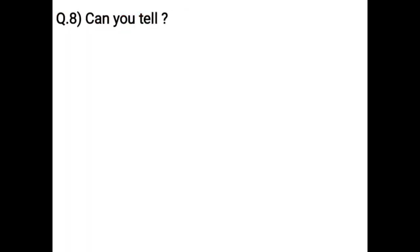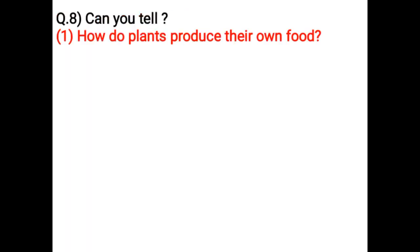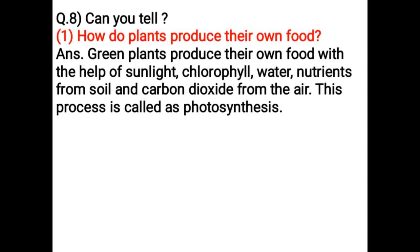Can you tell how plants produce their own food? Green plants produce their own food with the help of sunlight, chlorophyll, water, nutrients from soil and carbon dioxide from the air. This process is called photosynthesis.